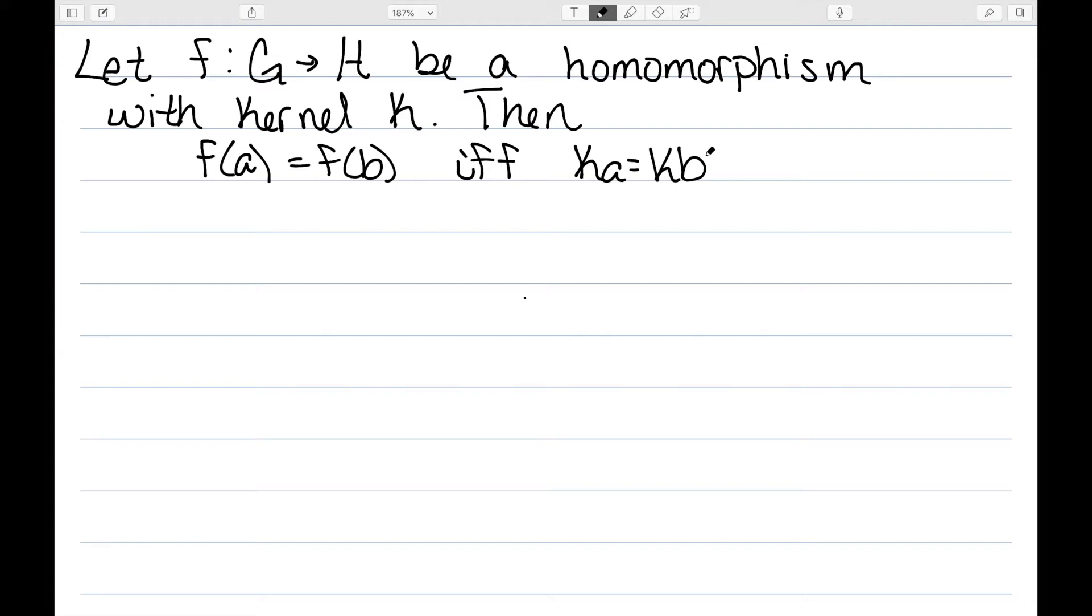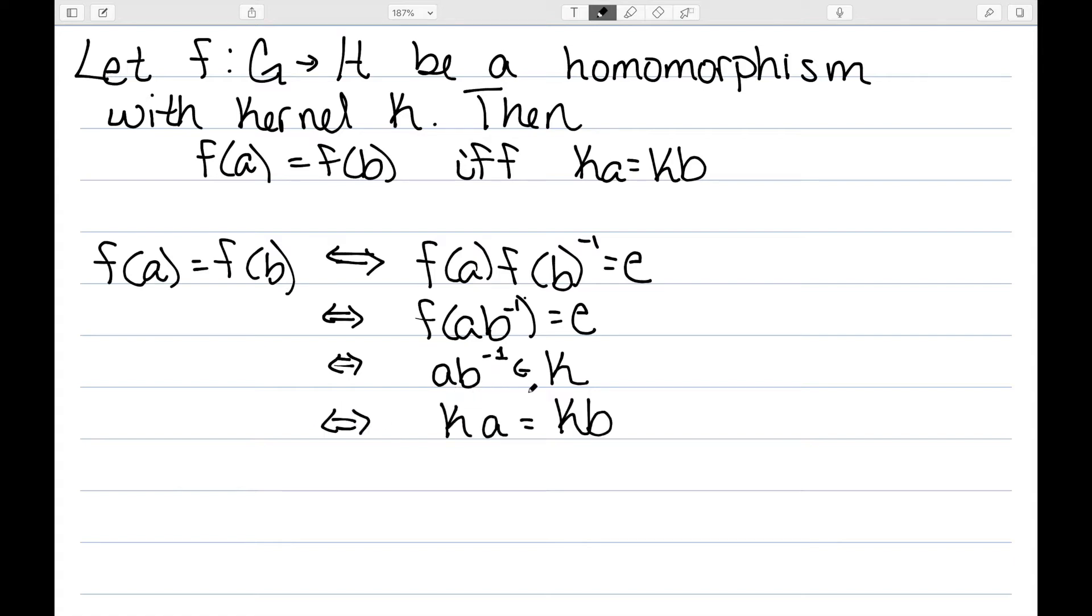In other words, we say any two elements in G have the same image under F if and only if they are the same coset of K. Well, F(A) is equal to F(B) if and only if F(A)F(B)^-1 is equal to E. To get from here to here, I multiply both sides by F(B)^-1 on the right. Using the identity of a homomorphism, we have that that's true if and only if F(AB^-1) is equal to the identity. By definition of the kernel, that means this is true if and only if AB^-1 is in the kernel. And we have that AB^-1 is in the kernel if and only if KA is equal to KB by something I've proven in a previous video.